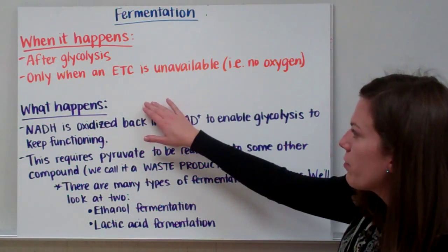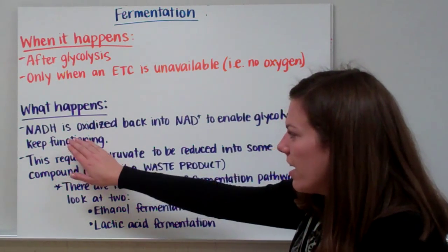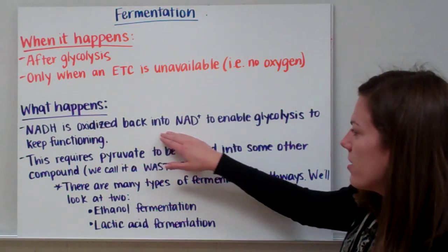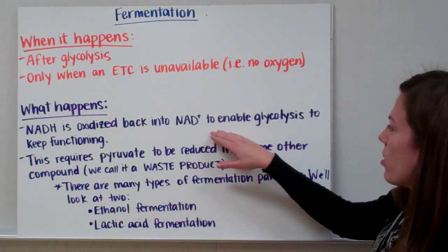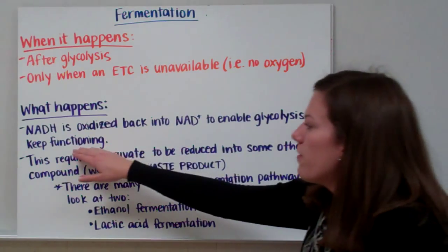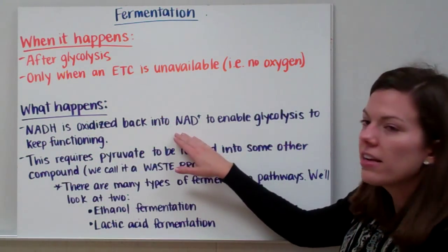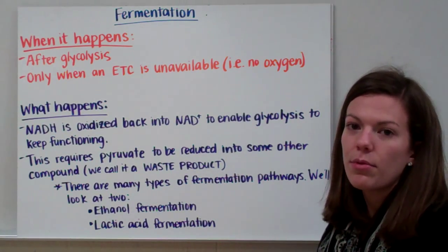What happens during fermentation is that our NADH is oxidized, so it's losing electrons, and we're turning it back into NAD+ in order to enable glycolysis to keep functioning. So basically we're recycling our NADH and turning it back into NAD+ so glycolysis can keep going on and on.